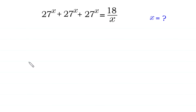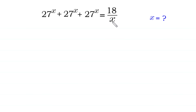Hello, welcome to how to solve this very nice exponential equation: 27 to the power x plus 27 to the power x plus 27 to the power x is equal to 18 over x.